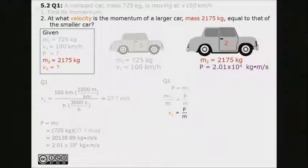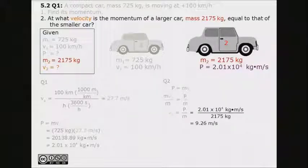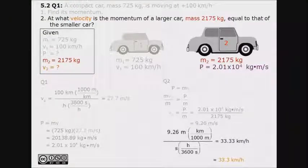Substitute the given information that we have and we arrive at an answer of velocity equals 9.26 meters per second. By converting 9.26 meters per second back into kilometers per hour, we arrive at our final answer with proper sig figs of v equals 33.3 kilometers per hour.